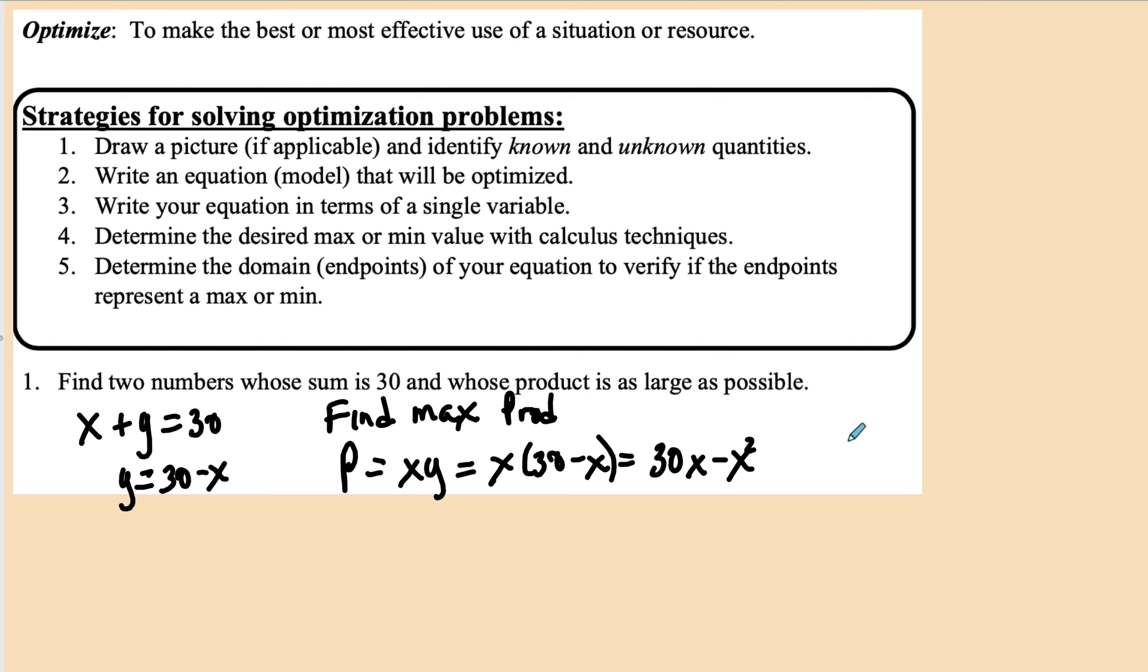Now if this is the case, remember the two numbers' sum is 30. So x can actually, if the sum is going to be 30, it can be as small as 0 or it can be as large as 30. If the sum is 30, either x is 0 and then the other number is 30, or x will be 30 and the other number is 0.